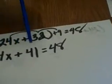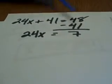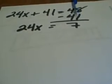24x plus 41 equals 48. Then you'll subtract 41 from both sides. 48 minus 41 gives you 7. So 24x equals 7.